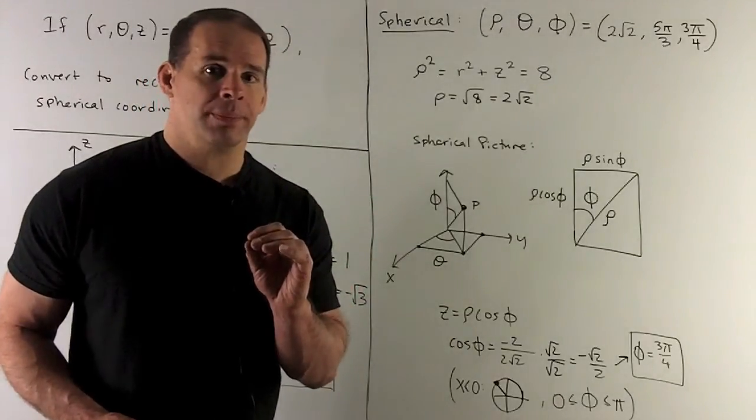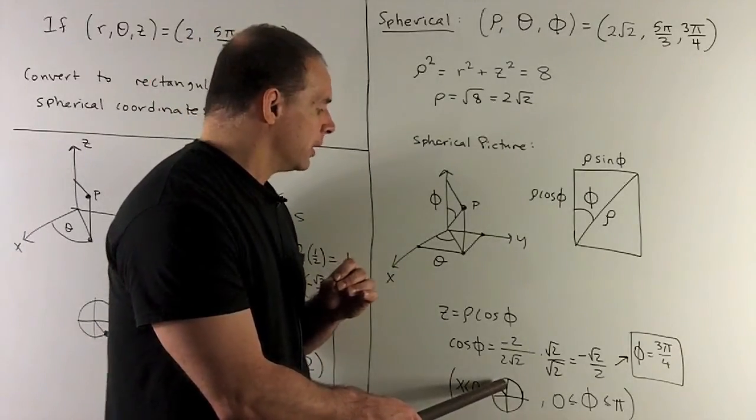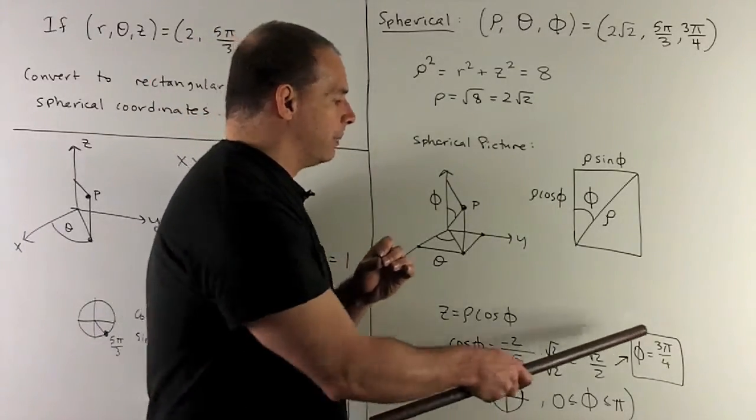So I want the angle between 0 and pi that has its cosine minus square root of 2 over 2. We know it's a multiple of pi-fourths. If it has a negative cosine, it's going to be in quadrant 2. So that means I'm looking at 3 pi-fourths.